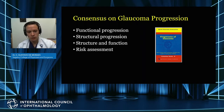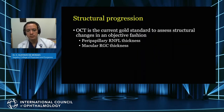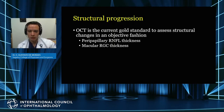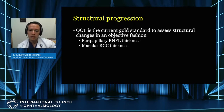For the purpose of this talk, I'll be focusing mostly on three aspects: structural progression with OCT, combining structural and functional data, and the importance of risk assessments. OCT has become our gold standard to assess structural changes in a more objective fashion. Disc photos are also helpful, but don't provide the level of objectivity and quantification that OCT does. The two main parameters are the scan around the optic nerve focused on retinal nerve fiber layer thickness, and the macula focused on retinal ganglion cell layer thickness.